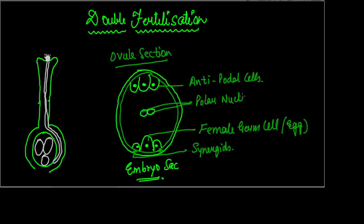The polar nuclei are diploid structures — they have 2n chromosomes, a complete set of chromosomes. Each polar nucleus has n chromosomes, and together the two form a 2n diploid structure. This is the overall cross-section of the embryo sac which is present in the ovule, and the ovules are present in the ovary.